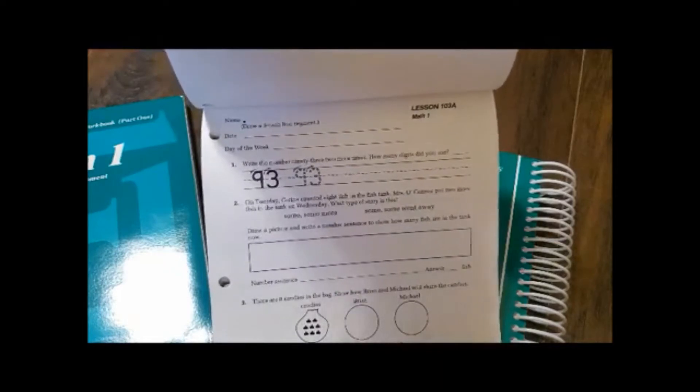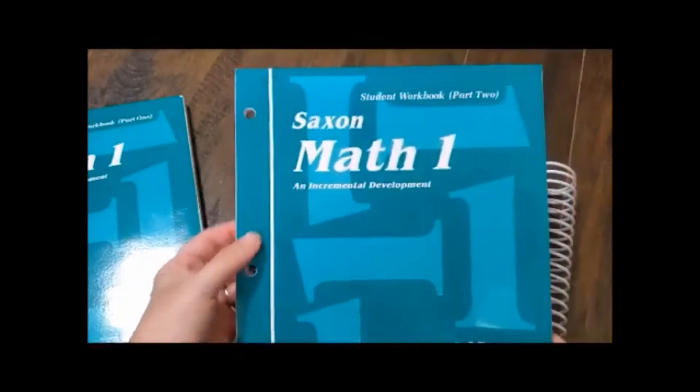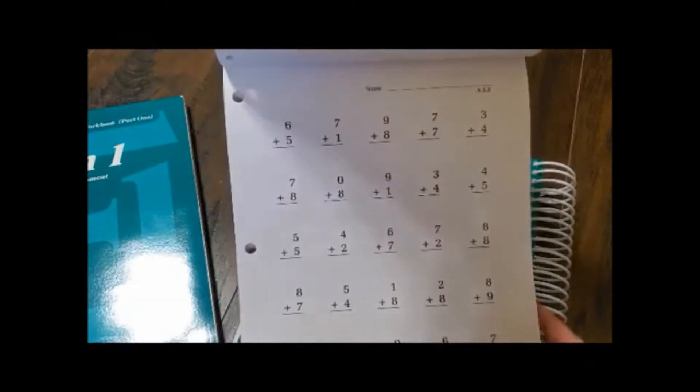And then you have a part two book. That's lesson 103A. A just means the front page, B is the back page. Math level one. And I love that this already has hole punches in here for me because what I do is I just tear them out and put them in their notebooks. Here's a practice time test.